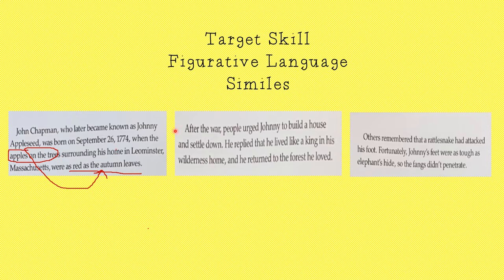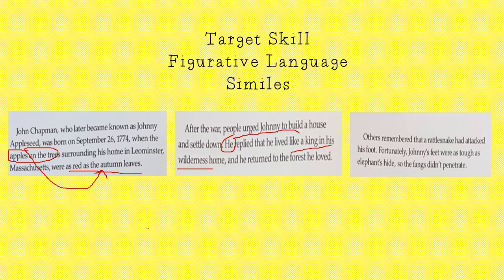After the war, people urged Johnny to build a house and settle down. He replied that he lived like a king in his wilderness home, and he returned to the forest he loved. Remember, similes use the words 'like' or 'as.' He lived like a king in his wilderness home — who was like a king? Johnny Appleseed. So Johnny lived like a king. There's your simile — comparing Johnny to a king. It's not saying he is a king; it's saying he is like a king.